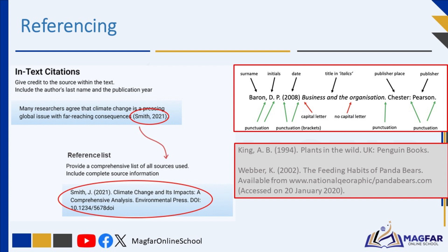For instance, in your discussion you might say: 'The process of photosynthesis requires sunlight (Grant, 1992).' At the end of your scientific report, you then provide the full reference in the references list section. Every reference that you refer to in the text needs to be shown in full in the references section.